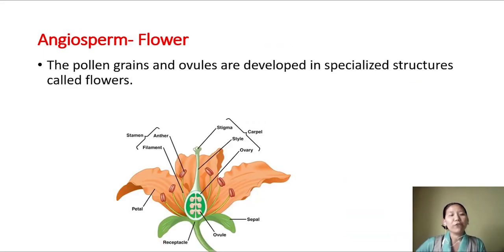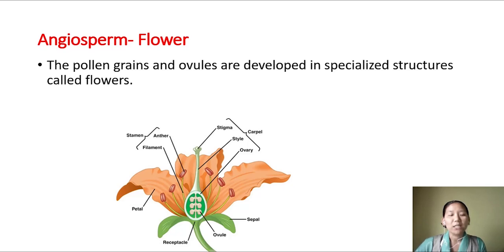An important feature found in angiosperms is the sex organ - the flower. Flowers are considered to be modified leaves, and this flower bears the male gametophyte and female gametophyte. Let us look at the structure of the flower first. Flowers are considered the modified shoot and have four whorls present on the receptacle.